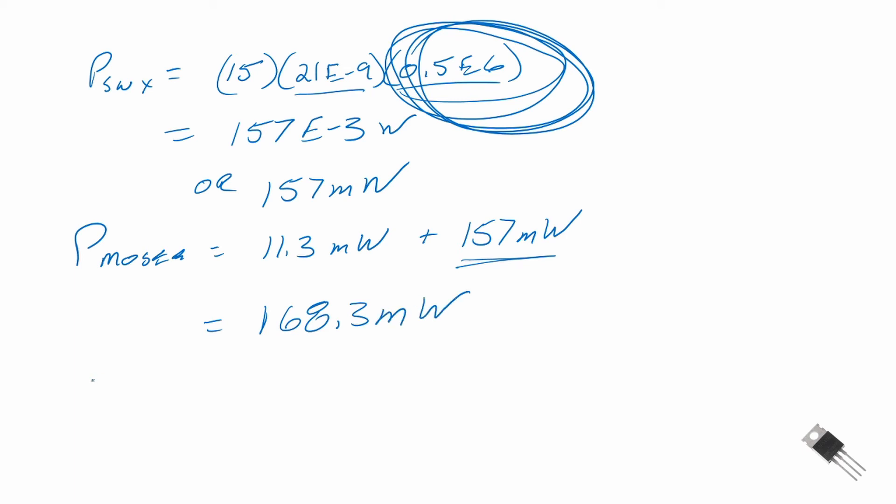Now let's look at our total losses. We had 200 milliwatts from our inductor, we had 400 milliwatts from our diode, and we had 168.3 milliwatts from our MOSFET. This provides us with a total of 768 milliwatts, which meets our requirement. I believe our power loss budget was 1100 milliwatts or 1.1 watts.